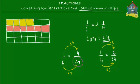The least common multiple will tell you how many pieces to cut the lasagna into so you can still mark those fractions. Let's find the least common multiple of 6 and 4, since those are the denominators. First we find the multiples of 6 and 4, then the common multiples, and then the least common multiple.